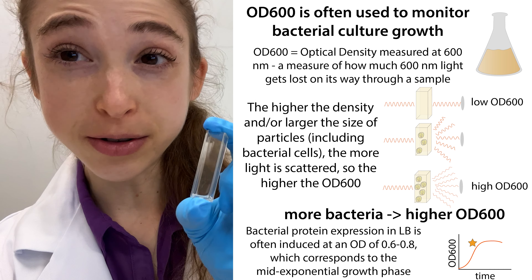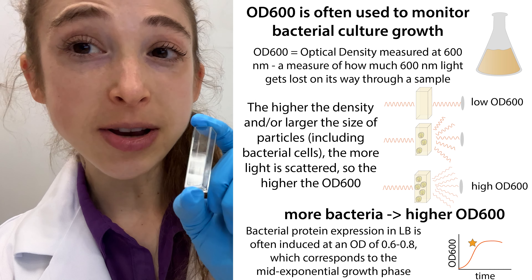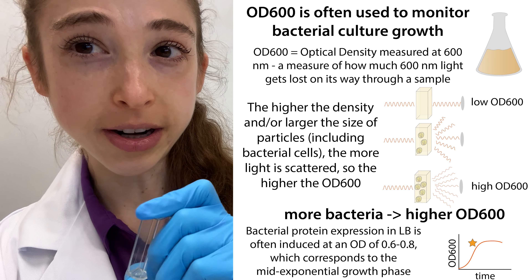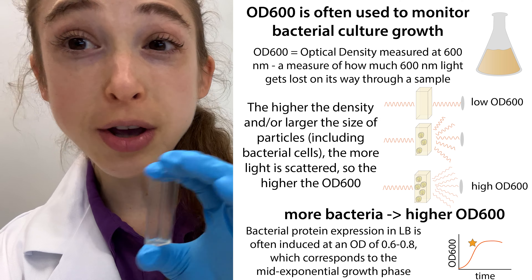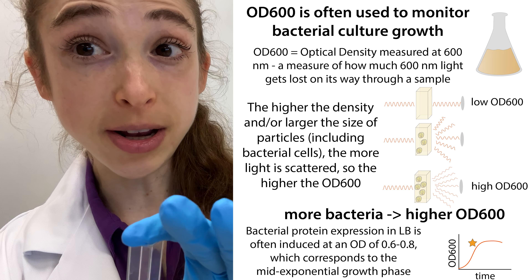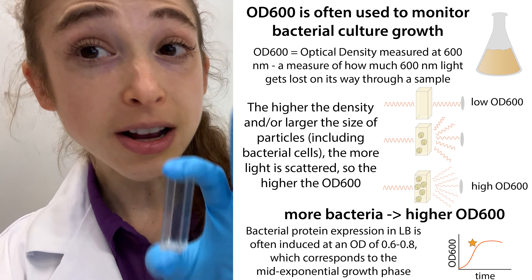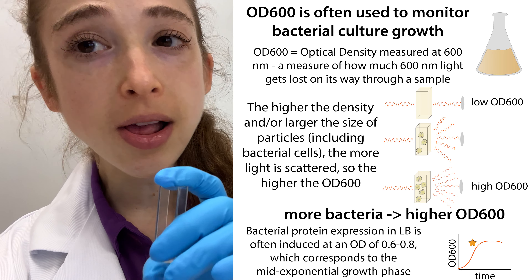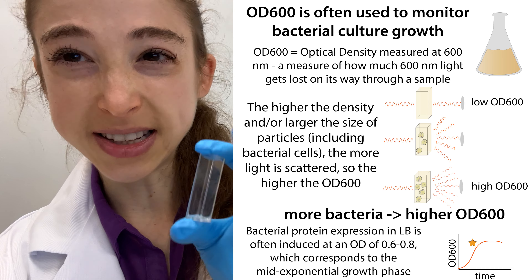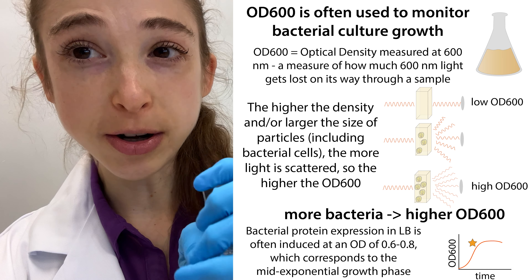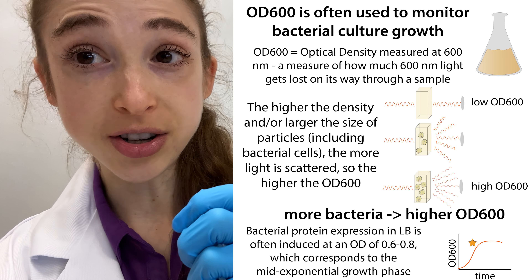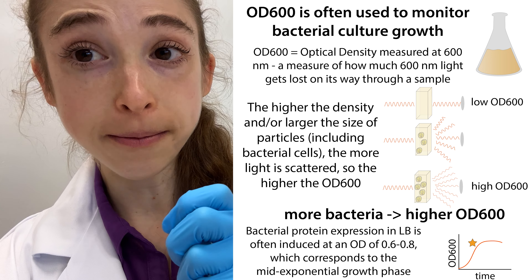This morning I'm monitoring some bacterial growth by measuring something called the OD600, which stands for the optical density at 600 nanometers. Sounds really scary, but all it means is that we take this reddish light that's like 600 nanometer wavelength and we shine it through a solution in which the bacteria are growing.